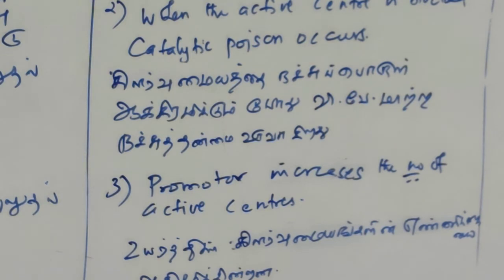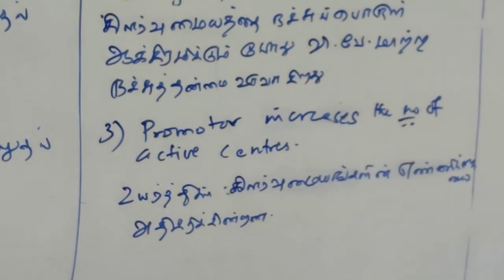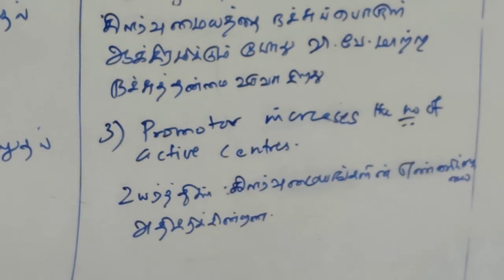A promoter increases the number of active centers. The active centers allow reactant molecules to adsorb and react. So in the adsorption theory, the promoter increases active centers, while a poison blocks them. This explains the role of promoter and poison in catalysis.